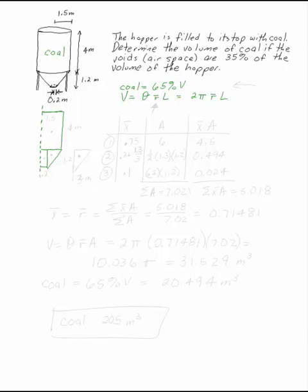Once I've revolved this around, I get the whole three-dimensional object, where this is 4 meters, this is 1.5 meters, this is 0.2, and the triangle here is 1.3 by 1.2 meters. This is what I want to revolve around. Once I want to revolve it around, I have to figure out what this centroid is for this whole shape.